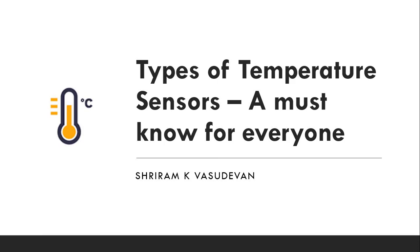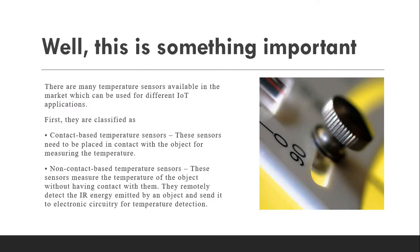Well, we have got two types of temperature sensor classification that we can see. The first one is contact-based, the second one is non-contact based. The contact-based temperature sensors need to be placed in contact. They are to be in touch with the object with which you are going to measure the temperature.